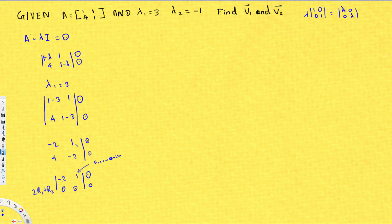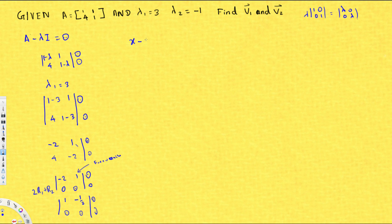To complete Gauss-Jordan, I need to make the pivot equal to 1, so I divide the first row by -2. That gives [1, -1/2; 0, 0]. Now I can write the equation: x - (1/2)y = 0. Since y is the free variable, x equals (1/2)y.